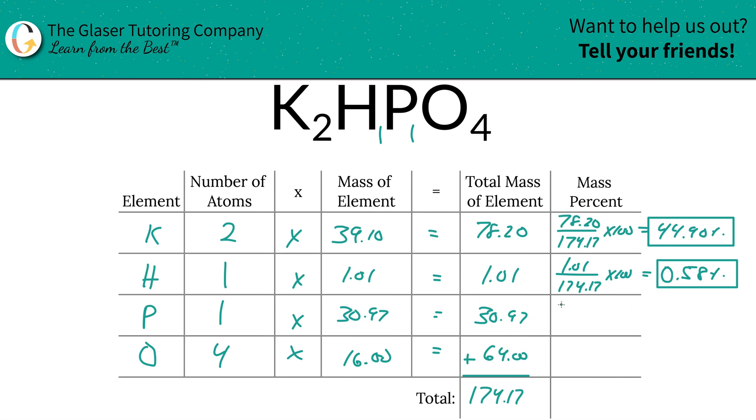Next we're going to do phosphorus. That's going to be 30.97 divided by the total of 174.17. Hopefully you're detecting the pattern by now, and it makes it quite apparent when you do repetition. So 17.78%.